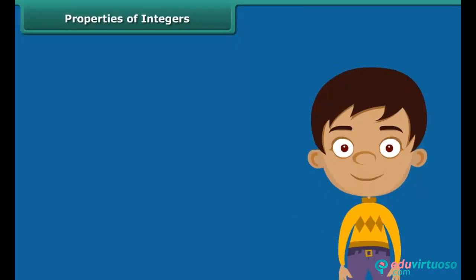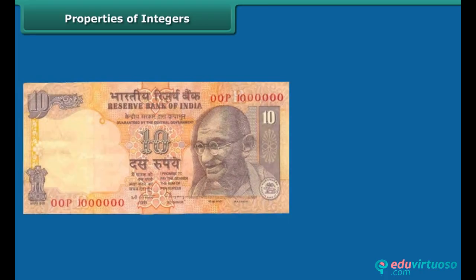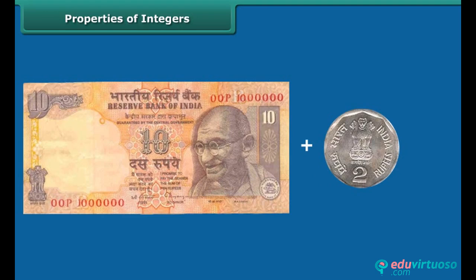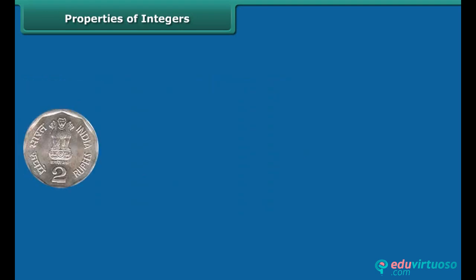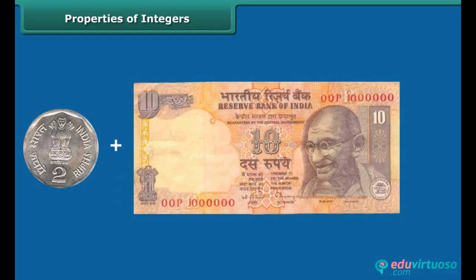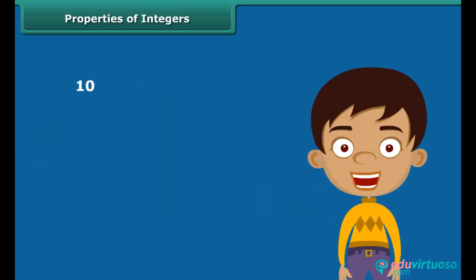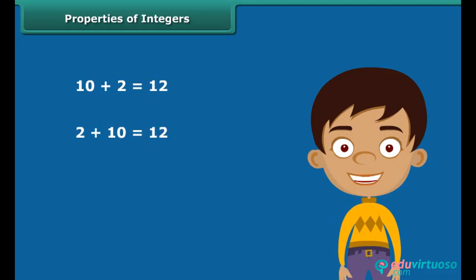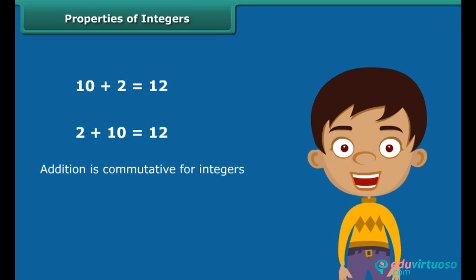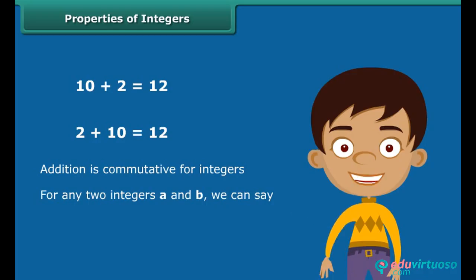Let's now move towards another property — that is the commutative property. This is a 10 rupee note. If we add one coin of 2 rupees, we get 12 rupees. Now take a coin of 2 rupees and add one note of 10 rupees — again we get 12 rupees. We can write it as 10 plus 2 equals 12 and 2 plus 10 equals 12. In both cases we get the same answer. This means integers can be added in any manner.